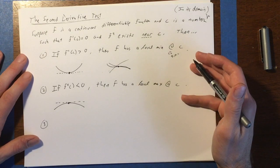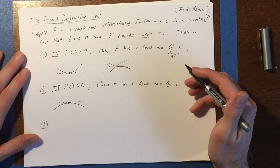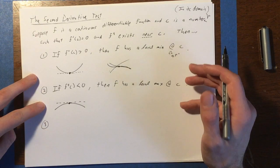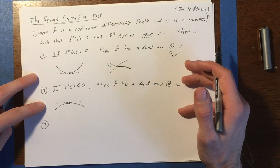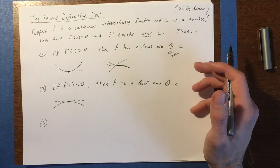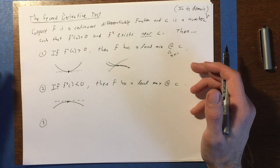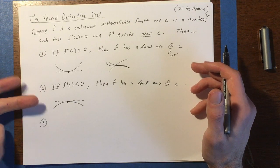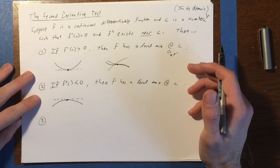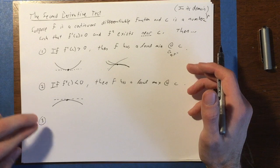The benefit that this has over the first derivative test is you don't need to make the sign chart, you just have to check the value of the second derivative at that critical number and then see if it is positive or negative. So instead of testing a bunch of values, you just test one value. The downside is, first of all, you have to find the second derivative, which can be a process that can be a little bit annoying to do occasionally. And the other downside is case three.